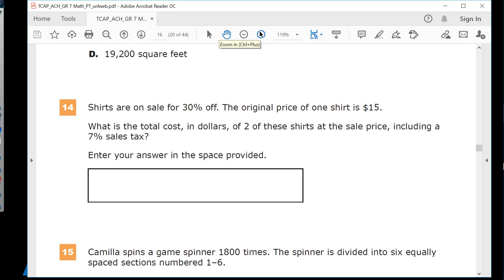A couple things you have to know ahead of time. Number one, you can add the prices of the two original shirts and then apply the 30% discount to that number, or you could handle the shirts individually. The other thing you have to realize is the 7% sales tax goes on whatever the sale price is, not the original price. You don't apply 7% sales tax to $15 if you're not paying $15.